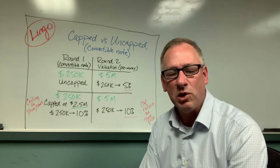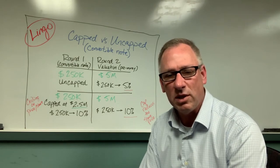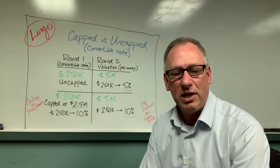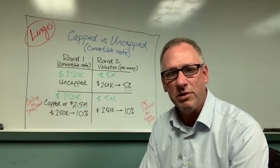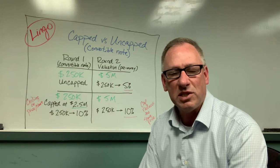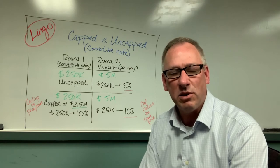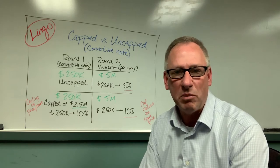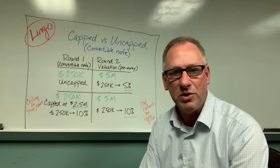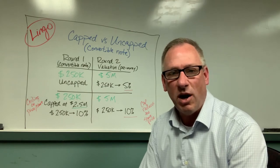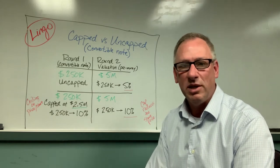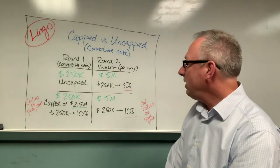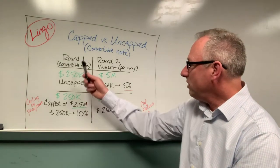It's setting a cap in the agreement of a certain future valuation, but it's really putting a ceiling on the price per share of the future shares. So it's guaranteeing that early stage investor a minimum amount of equity they can buy with their money. It's easier maybe to show this as an example, so let's go to the whiteboard and start here.